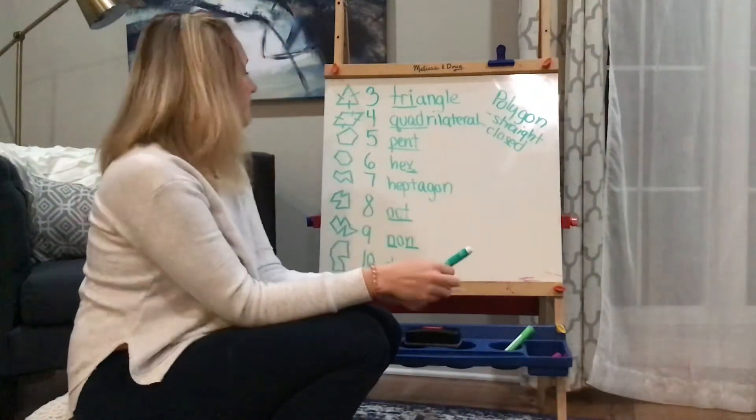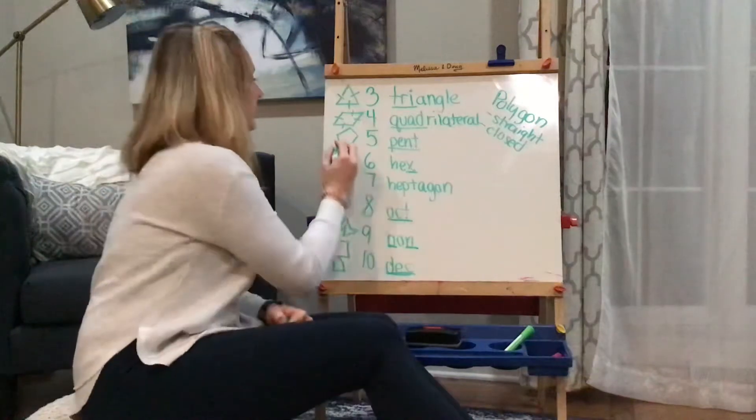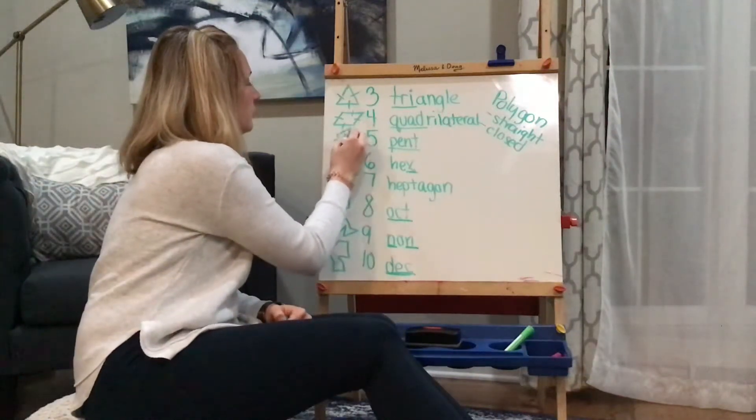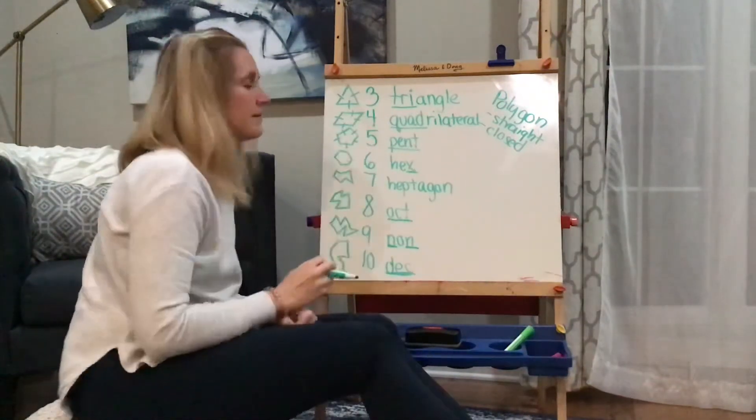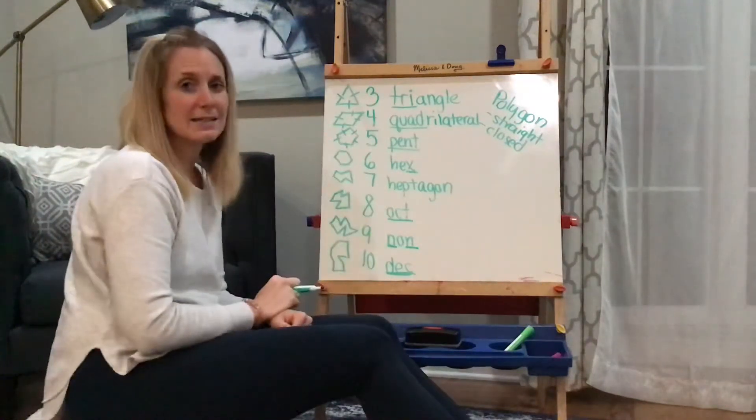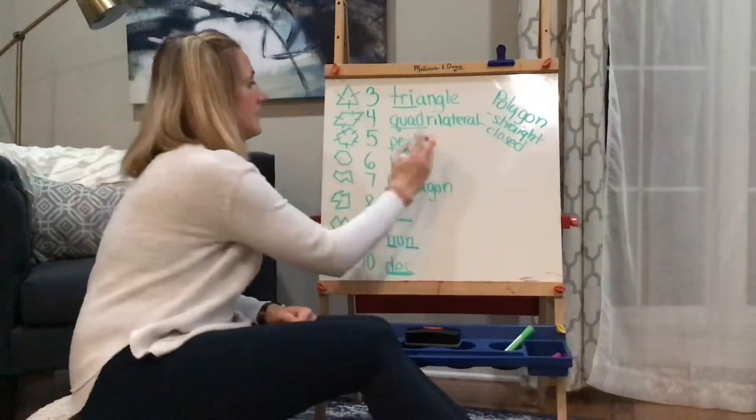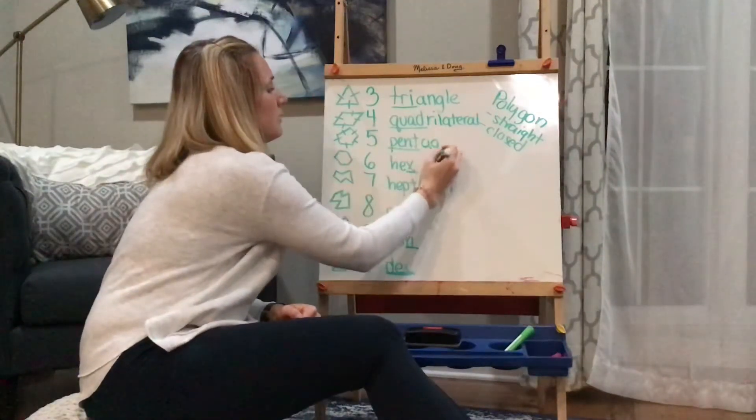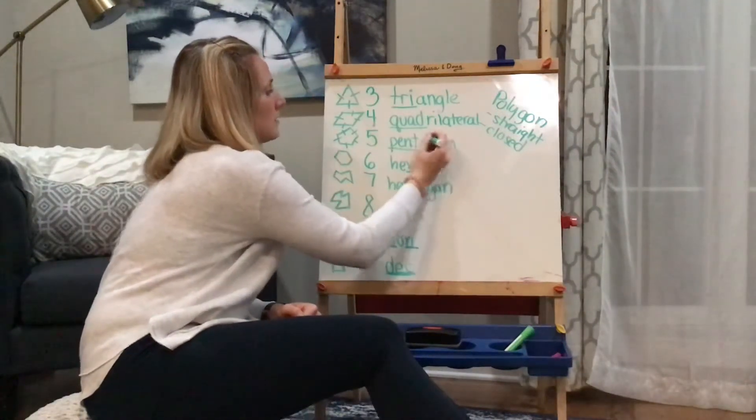Then let's go down to the next one. We count: one, two, three, four, five. Remember, looks like a tent that rhymes with pent? That's how we remember the name pentagon.